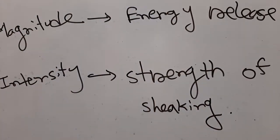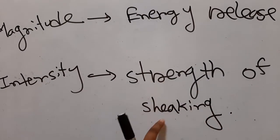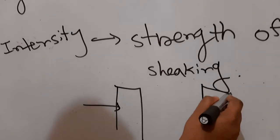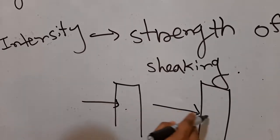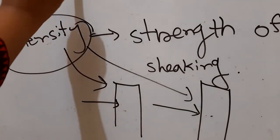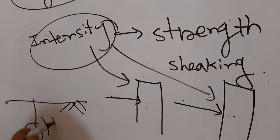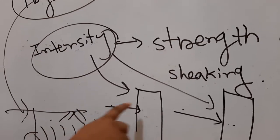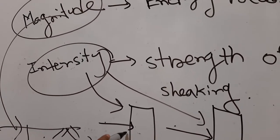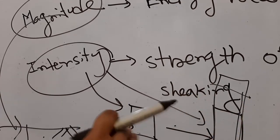Magnitude is the energy release during the earthquake, and intensity is the strength of shaking observed at the structure. The same earthquake will cause different structures to shake differently, so intensity will be different at each structure. But magnitude for the same earthquake will be the same, because the energy release is the same. Intensity can differ — standing in a one-story building versus a 20-story building will give different intensity values.